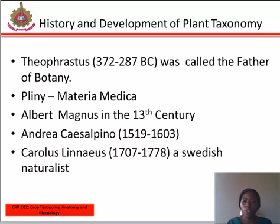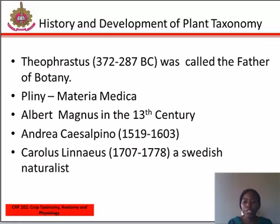Joseph Pitton de Tournefort was a contemporary of John Ray and tried to work out a system of classification of flowering plants. He divided plants first into two groups — trees and herbs — and used the characters of inflorescence and flower. Tournefort was the first to give a clear concept of a genus, although Gaspard Bauhin had mentioned it in his works. Tournefort's work proved very helpful in identifying plants by species.